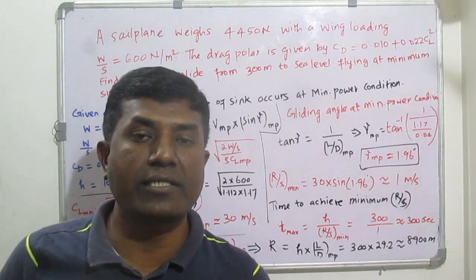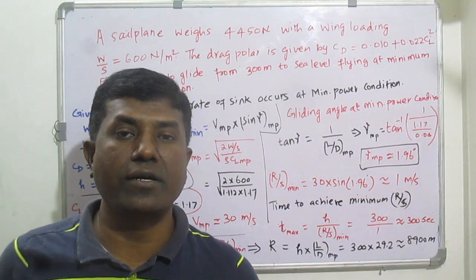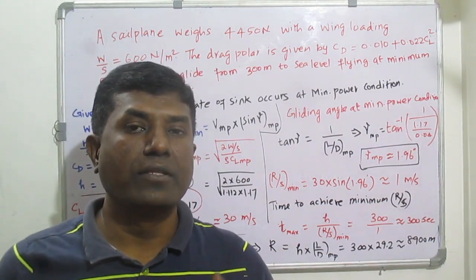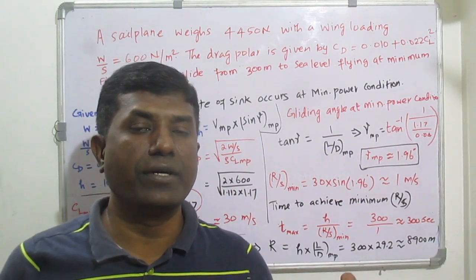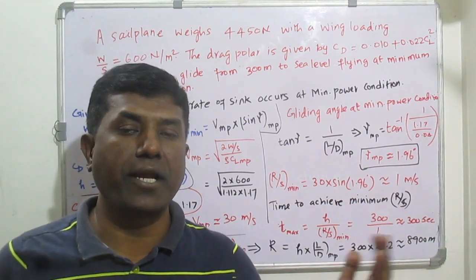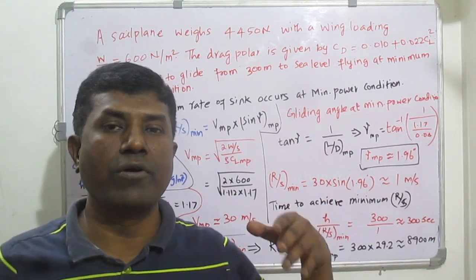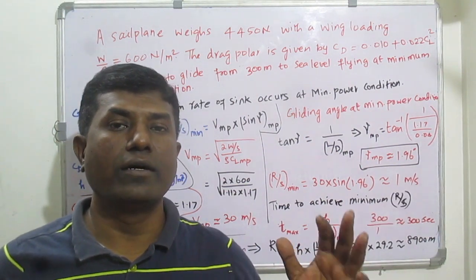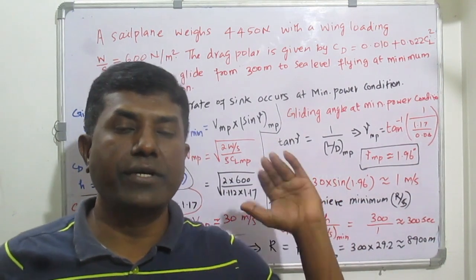Good evening, dear friends. In this series on landing aerodynamics, we are discussing gliding flight. In the previous class we covered steady descent, gliding flight, how to achieve the minimum rate of sink, the maximum range, and also how to find the minimum glide angle. Now in this class we will solve a numerical problem based on glider flight.